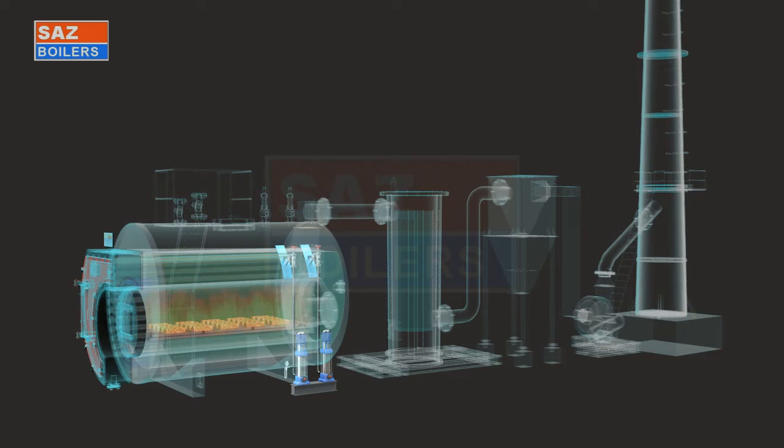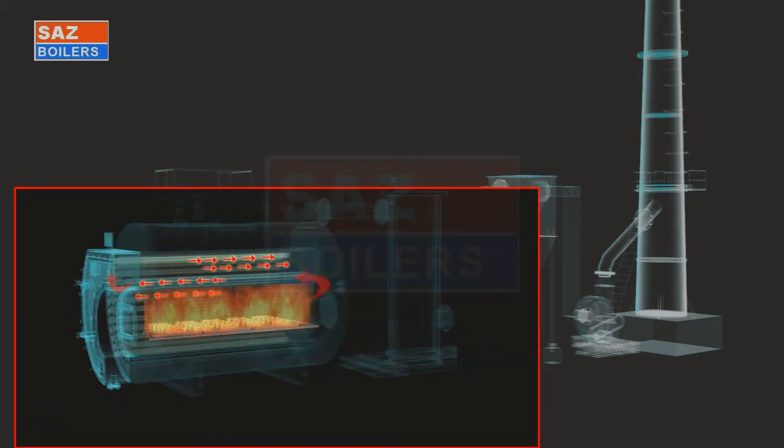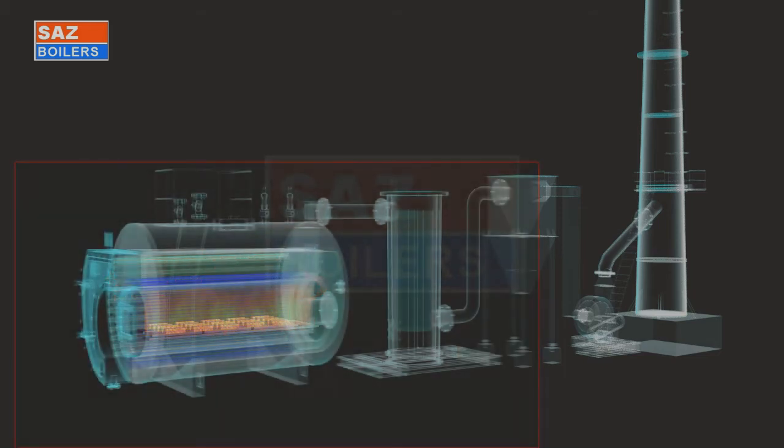Fuel is spread on grate bars and then burned manually. ID fan is started to supply required combustion air. Boiler has an extended reversal chamber to divert the flue gases to second and then to third pass smoke tubes. Optimum gas velocities are maintained to ensure minimum flue gas outlet.